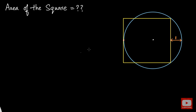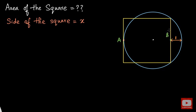First of all, I would like to name the side of this square as some variable — let us say x. So here we have taken the side length of the square as x. Now I would like to name this point as A and maybe this point as B. I will join A and B, and we know that the length of this line will be the same as the side of the square, that is equal to x.